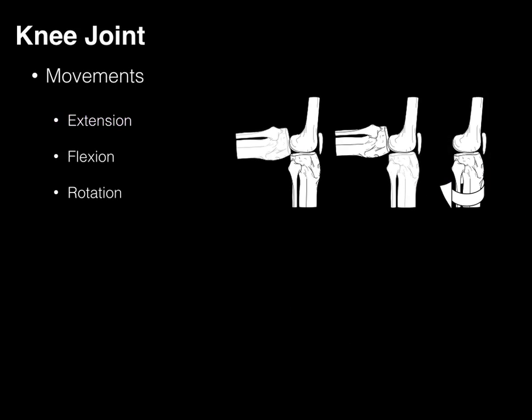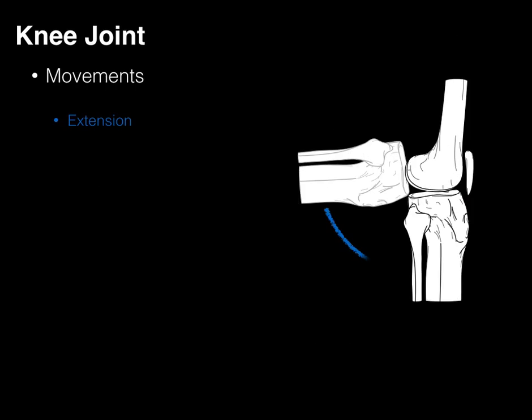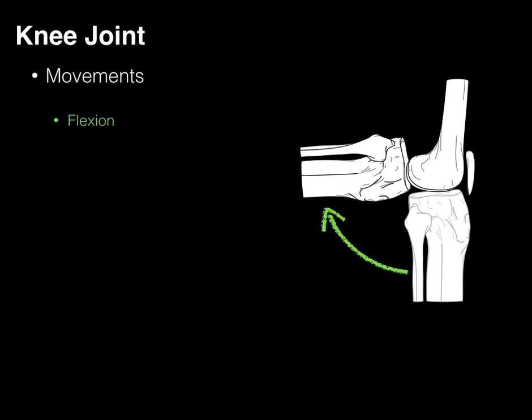The movements of this knee joint are extension, flexion, and rotation. Extension is straightening the knee so that it becomes straight; the primary muscles that do this are our four quadriceps muscles. Flexion of the knee joint is primarily from our hamstrings — semimembranosus, semitendinosus, and biceps femoris — with a little contribution from the gastrocnemius muscle as well.